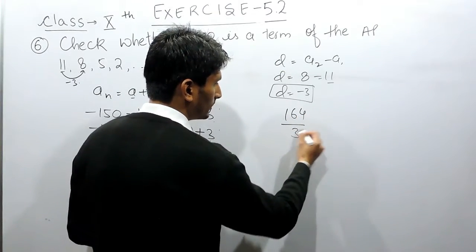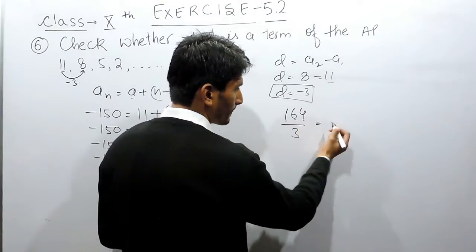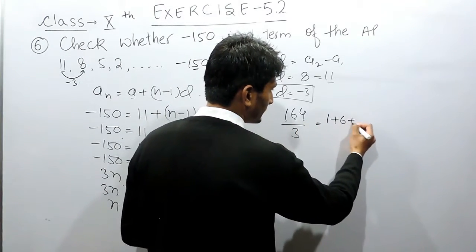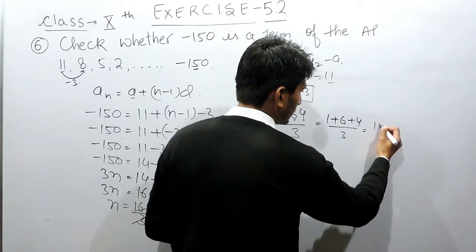There is a divisibility rule for 3: if you want to check that any number is divisible by 3 or not, you have to add all the digits in this number. So if I add this, 6 plus 4 is 10, so this will become 11 upon 3.